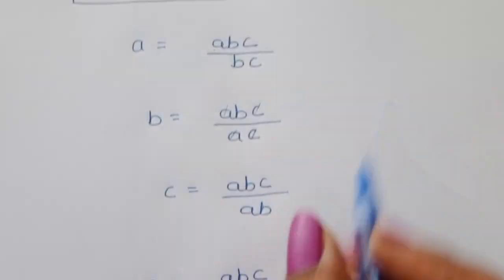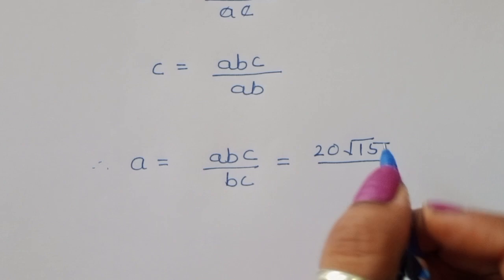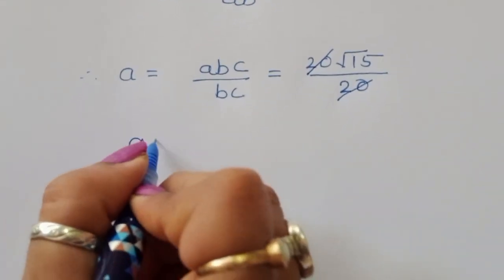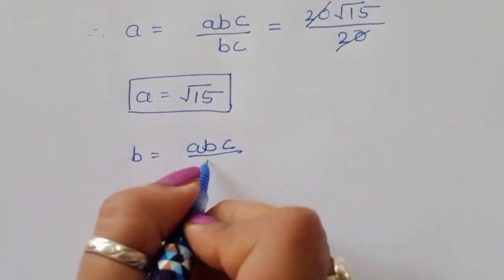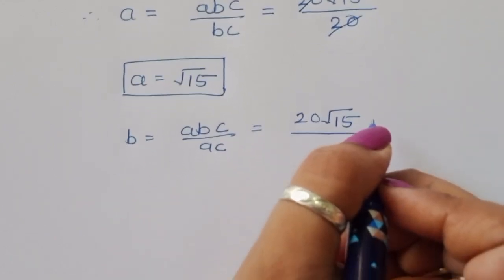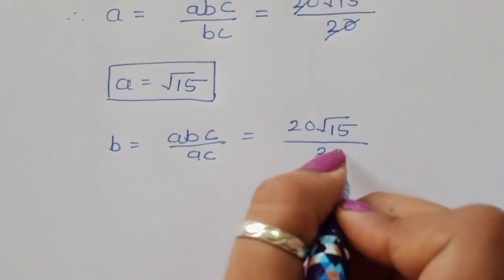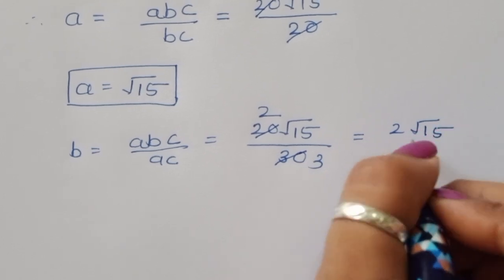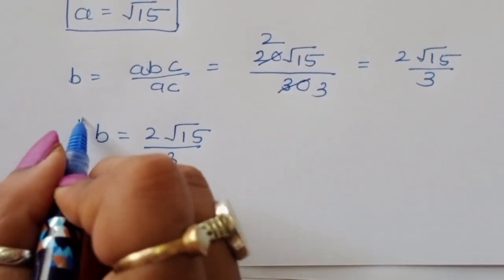Therefore, the value of A equals ABC divided by BC, which is 20 square root of 15 divided by 20. The 20 cancels, so A equals square root of 15. For B, we compute ABC divided by AC: 20 square root of 15 divided by 30, which simplifies to 2 square root of 15 divided by 3.